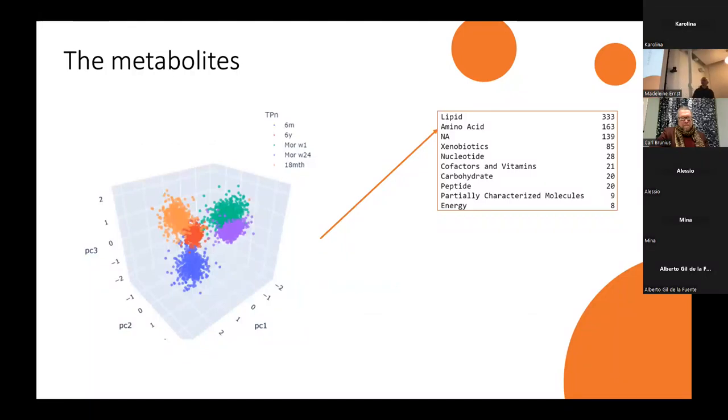If we PCA it, then it looks kind of like this. We see mothers at two time points are quite close to each other, and a bit separated from the children ones. So we see how the chemistry is changing during the child's growth.